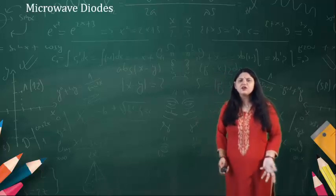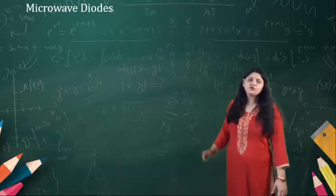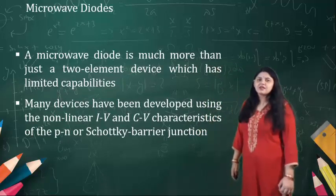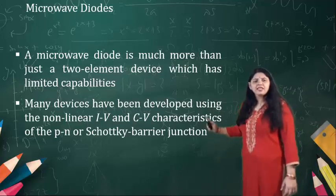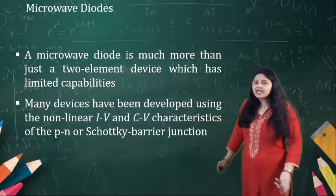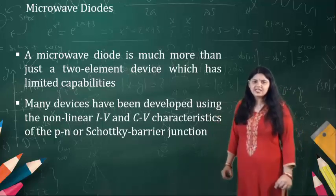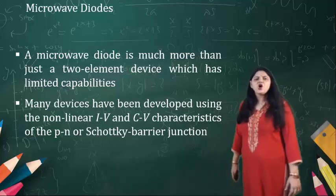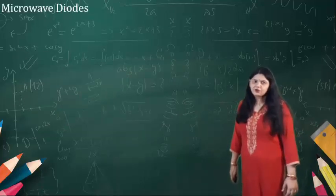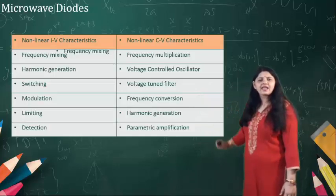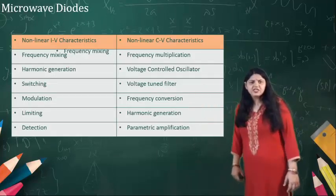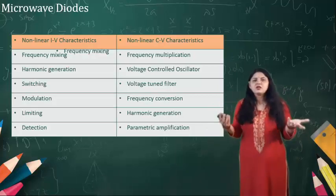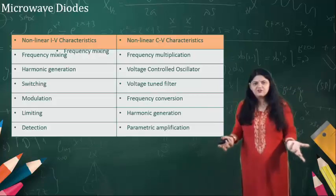This is about the basics of various solid state microwave diodes, in which the microwave diode is much more than just a two-element device with limited capabilities. Many devices are developed using the non-linear IV characteristics — that is the current and voltage characteristics — and the CV characteristics, that is the capacitance versus voltage characteristics of the PN and the Schottky barrier diode. According to the non-linear IV characteristics, we can go for frequency mixing applications, harmonic generation, switching, modulation, limiting, and detection.